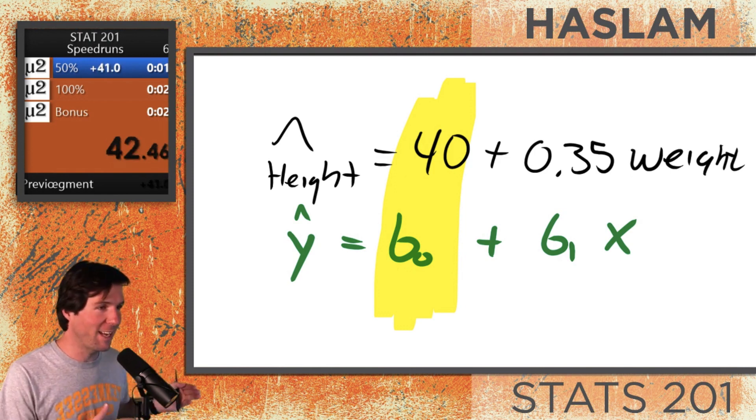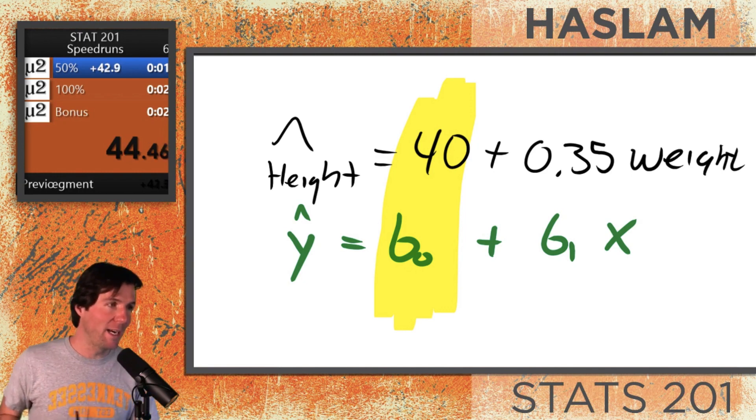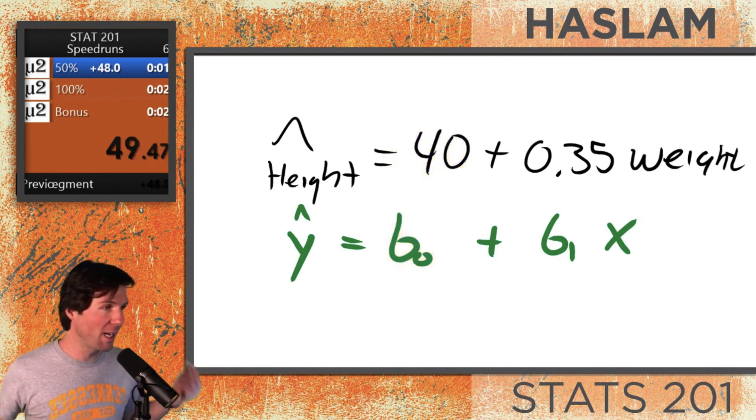Why did I say this? Because weight is x, height is y, and then B0 is 40. So when x is equal to 0, we expect y to equal B0.